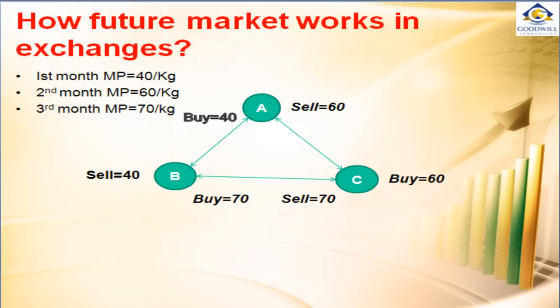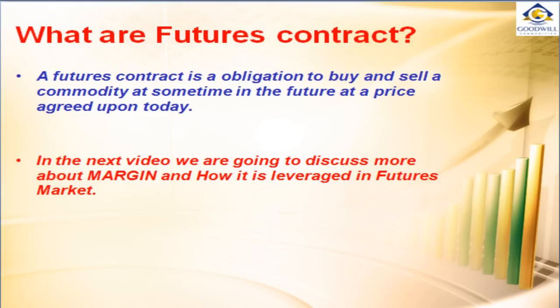In this way, more than thousands and lakhs of transactions are happening between traders across the world, organized by organizations called Exchanges. Thanks to technology development, electronic platforms and the internet revolution that make this process very simple. Now we can define what are futures contracts: a futures contract is an obligation to buy and sell a commodity at some time in the future market, at a price agreed upon today.